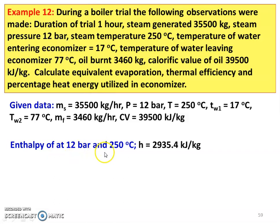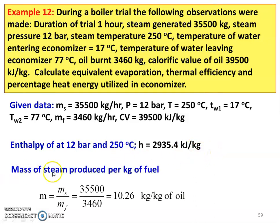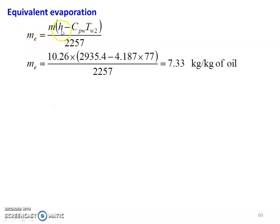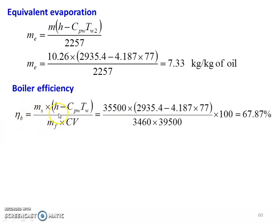The enthalpy of steam at 12 bar and 250 degrees Celsius: H equals 2935.4 kJ per kilogram — this data from the steam table. Mass of steam produced per kilogram of fuel: M equals MS divided by MF equals 35,500 divided by 3,460 equals 10.26 kg per kilogram of oil. Equivalent evaporation: ME equals M into (H minus Cpw into Tw2), where Tw2 is the temperature at the outlet of the economizer, divided by 2257. So, 10.26 into (2935.4 minus 4.187 into 77) divided by 2257 equals 7.33 kg per kilogram of oil. Boiler efficiency: eta B equals MS into (H minus Cpw into Tw2) divided by MF into Cv. So, 35,500 into (2935.4 minus 4.187 into 77) divided by 3,460 into 39,500 into 100 equals 67.87%.